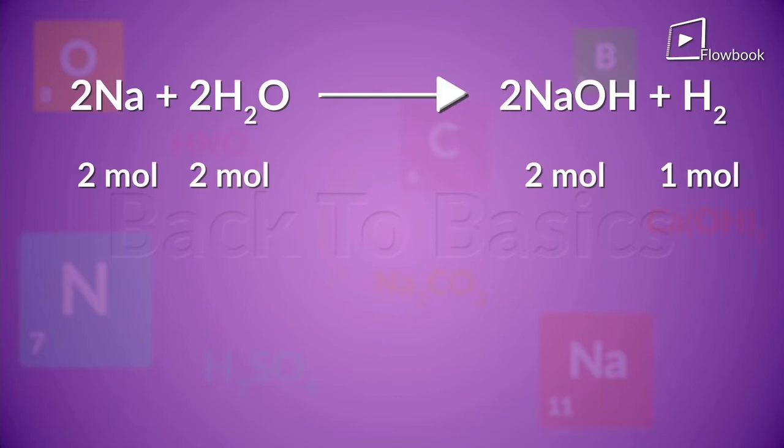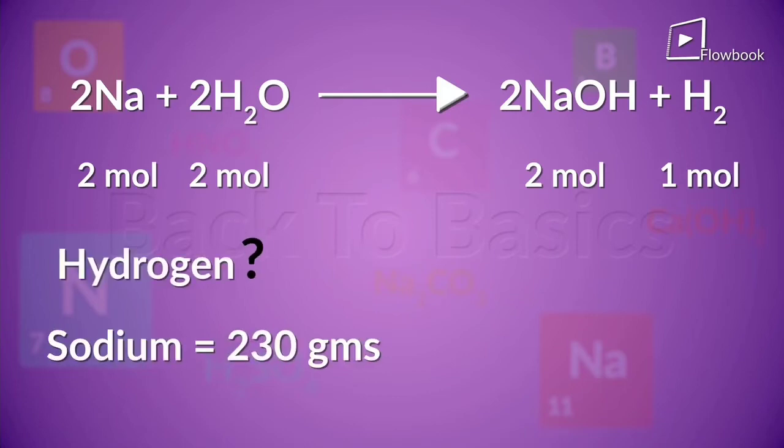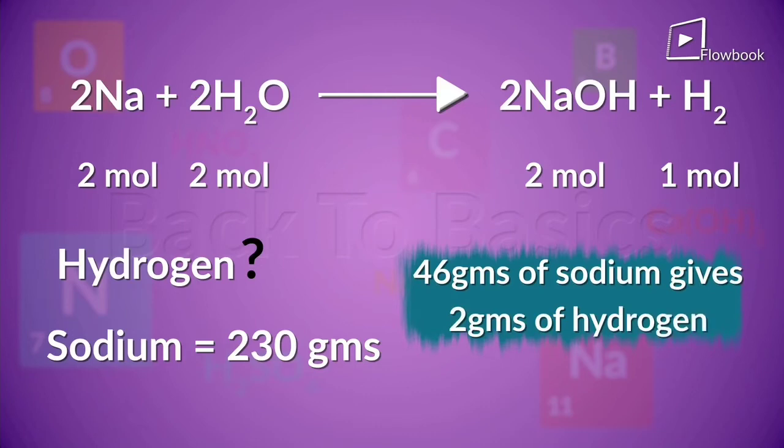In this equation, if we want to know how much hydrogen we get if the amount of sodium is 230 grams, we know from this equation that 46 grams of sodium gives us 2 grams of hydrogen.